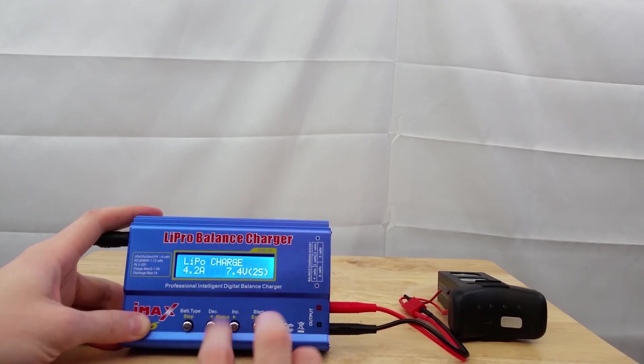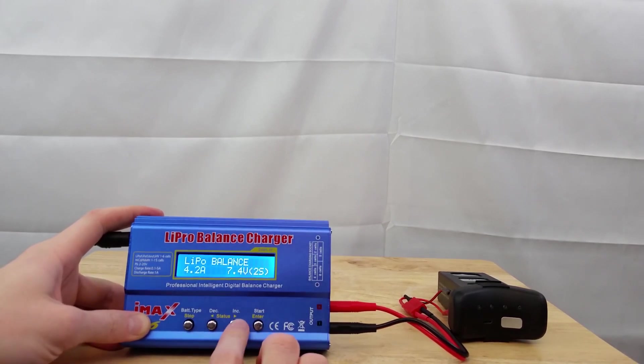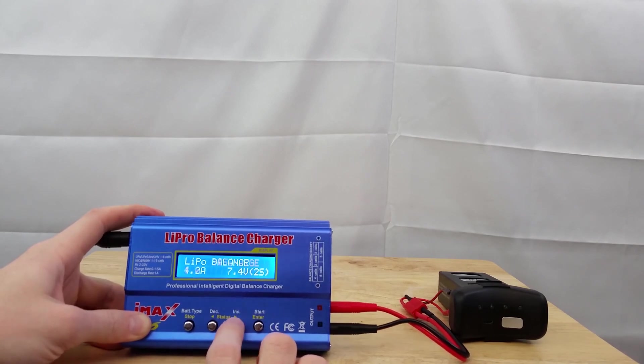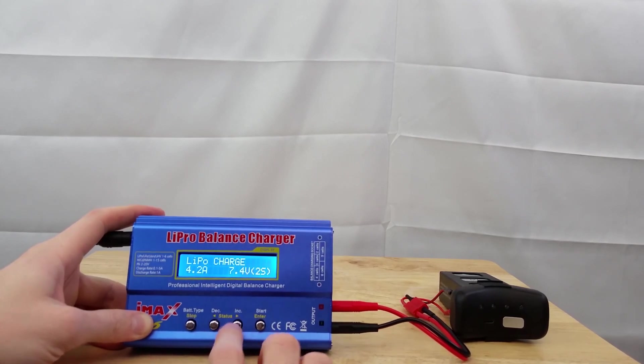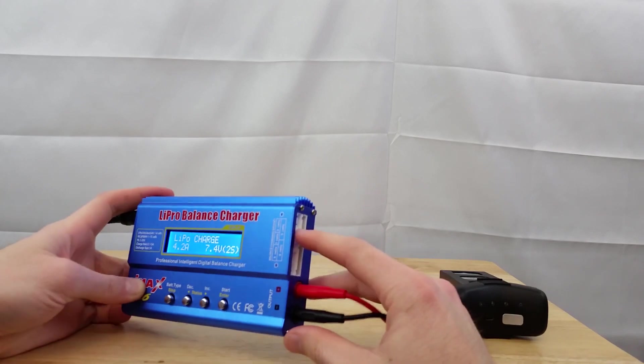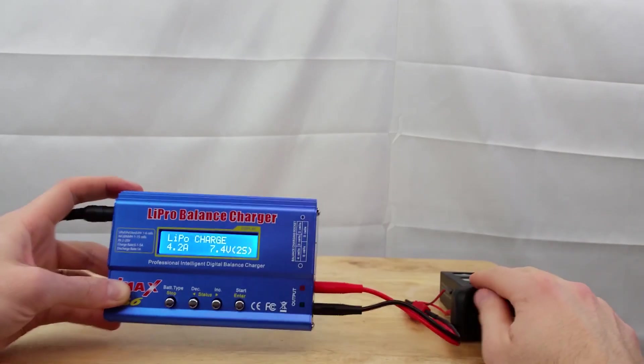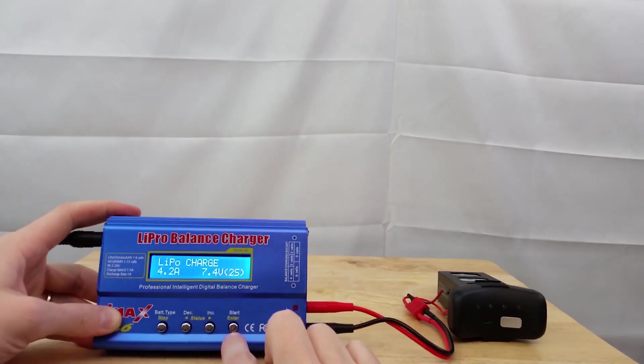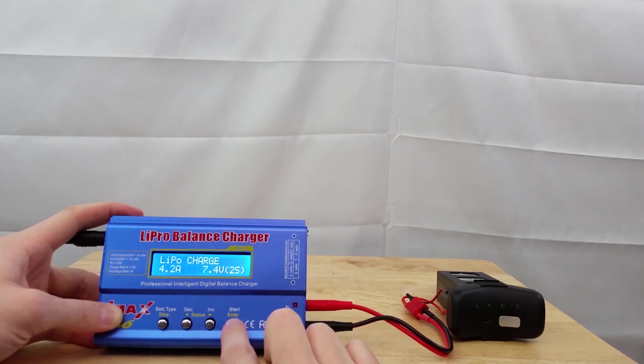Now once you're on here, you'll scroll left and right to do lipo charge. This doesn't have a balancing cable that goes in here, this particular battery. So we'll just do regular lipo charge. After that, you hit this button here on the right.